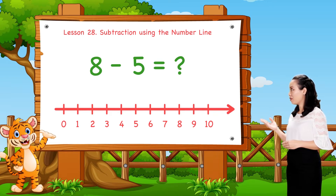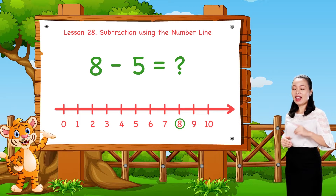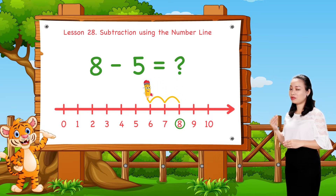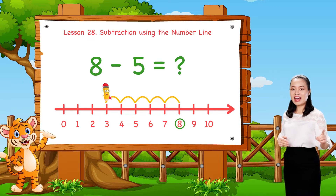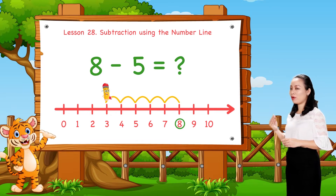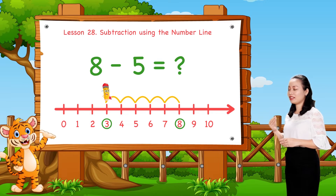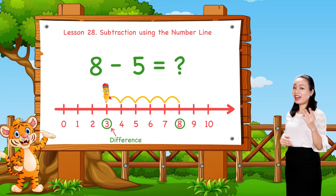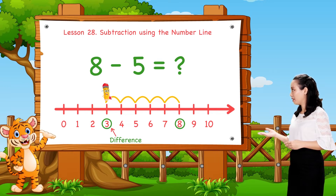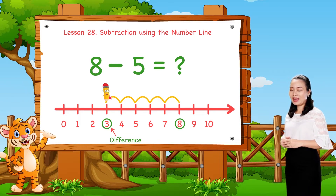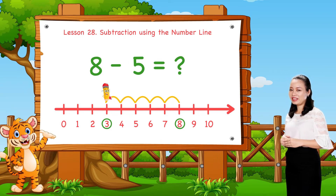We start from number 8. Then jump 5 numbers to the left. Then see the number where we stop. This number is the difference. Here we stop at number 3. Therefore,